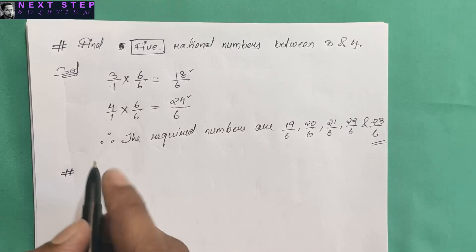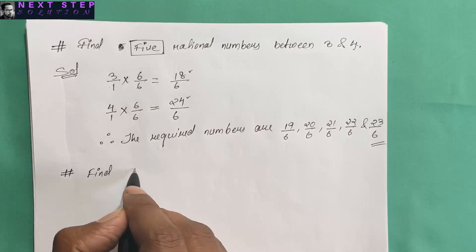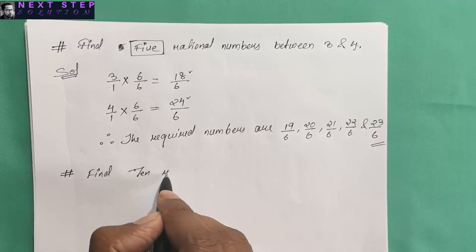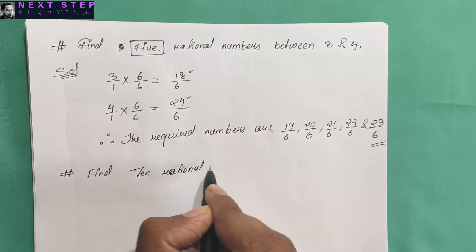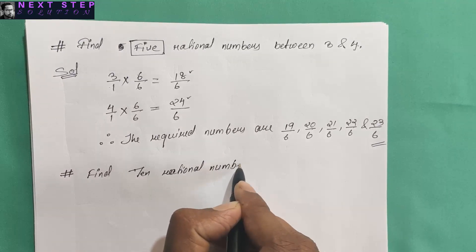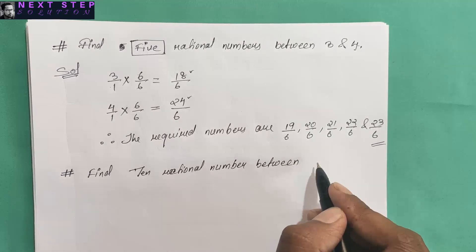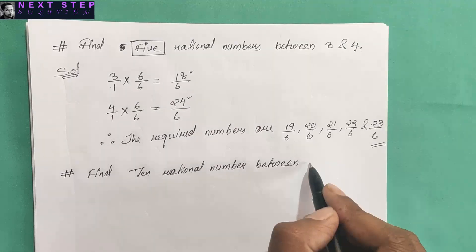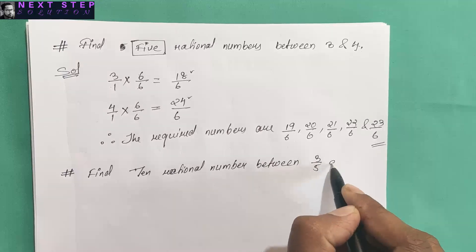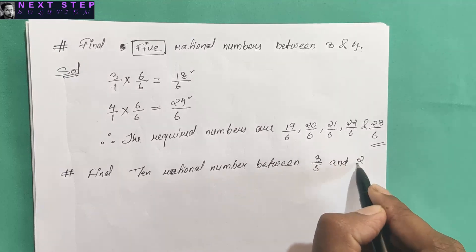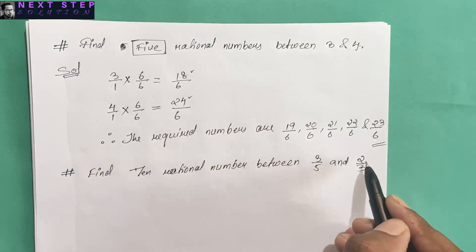Now in case you have two rational numbers with different denominators, suppose you are asked to find 10 rational numbers between 3 by 5 and 2 by 3. The denominators are different in this case.